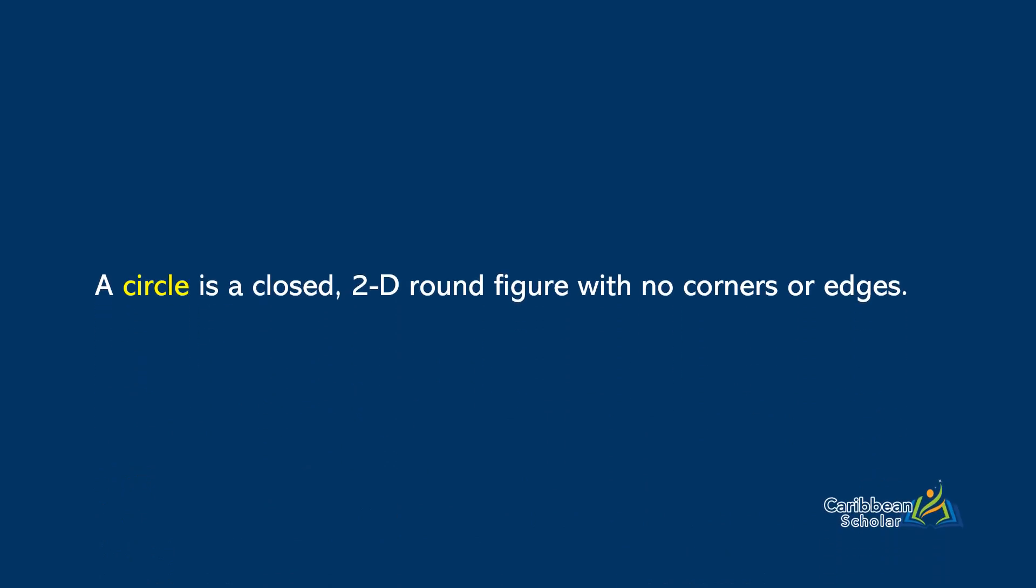A circle is a closed 2D round figure with no corners or edges. Here's a circle. Let's try to label the different parts and then I'll give you the formulae for the circumference and the area.